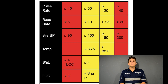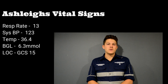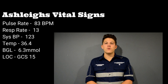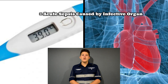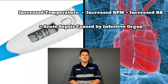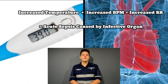Taking a baseline set of vitals is important for any assessment. Ashley's vital signs were all within normal healthy ranges for a young female adult. However, an increased temperature may indicate an infective organ as the cause of pain. Heart rate increases and a shallow or decreased respiratory rate may indicate acute sepsis, fever or shock.